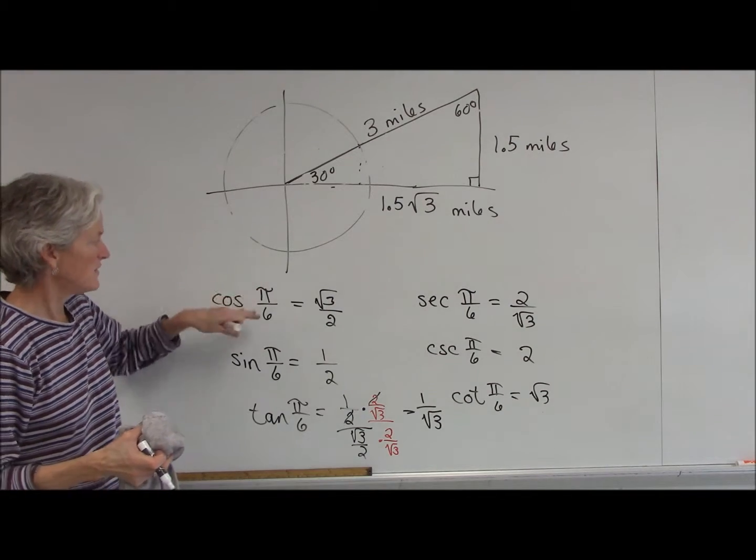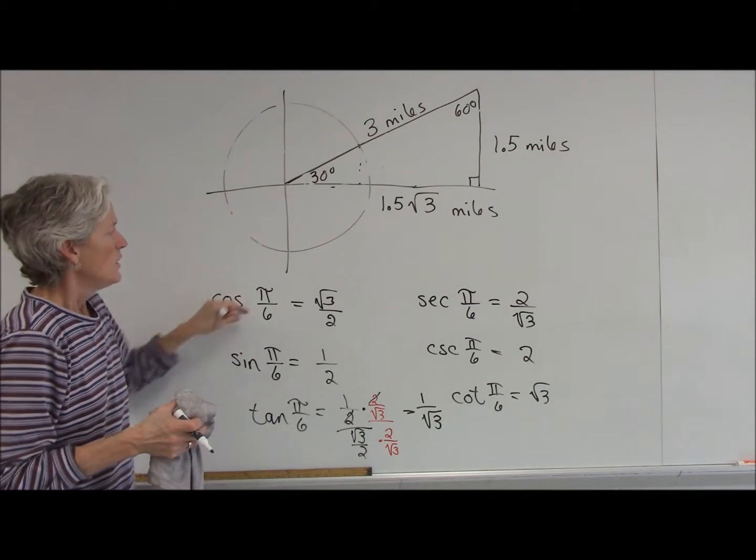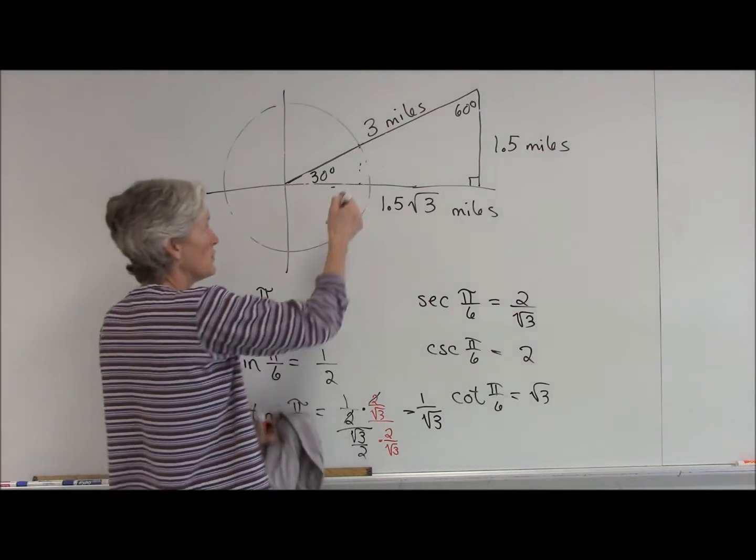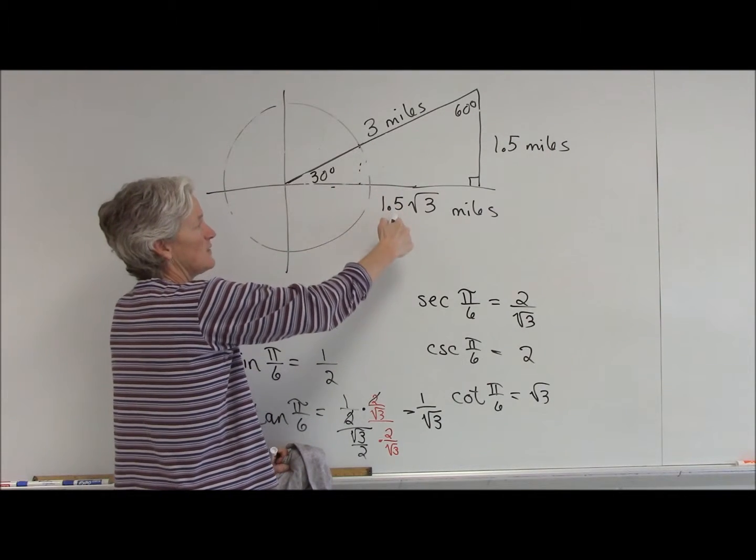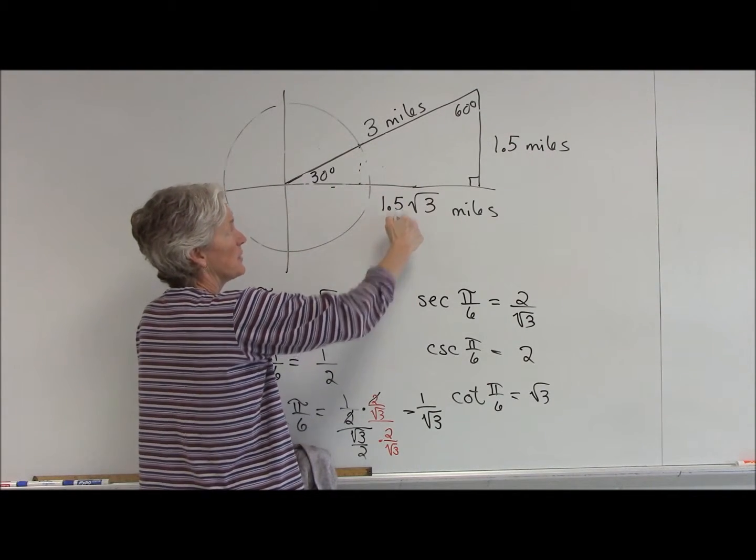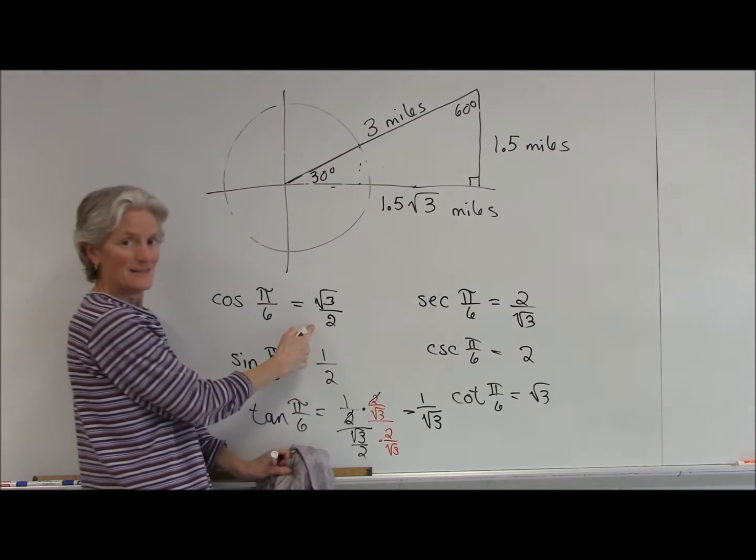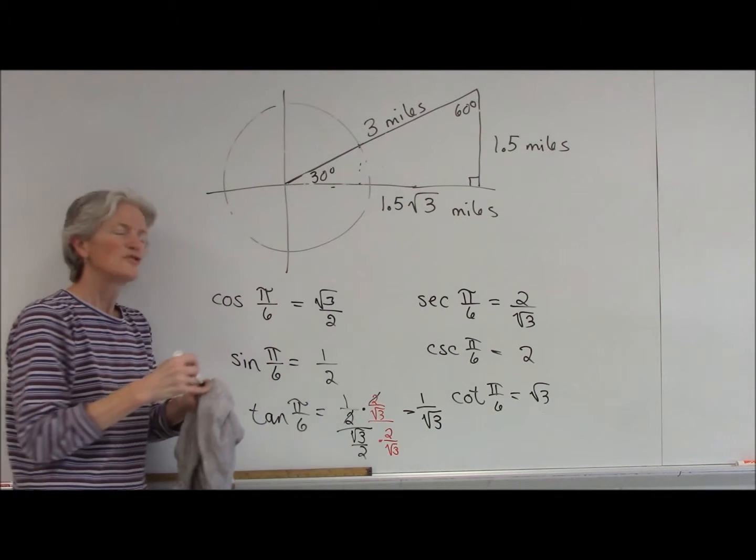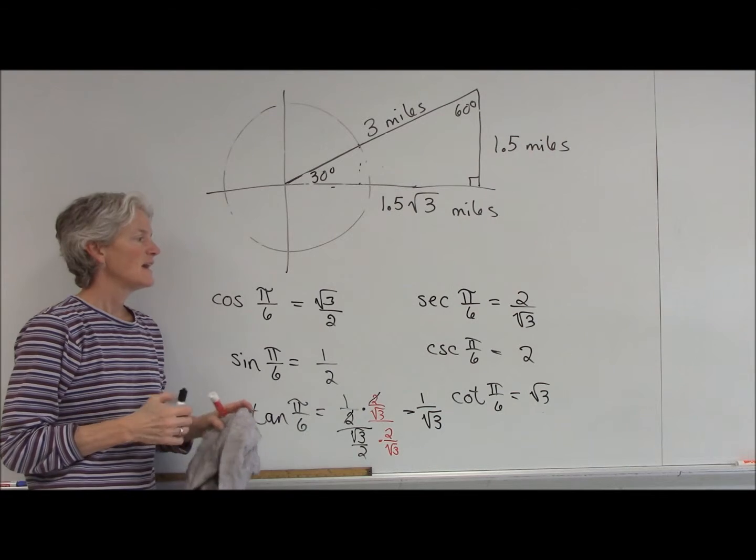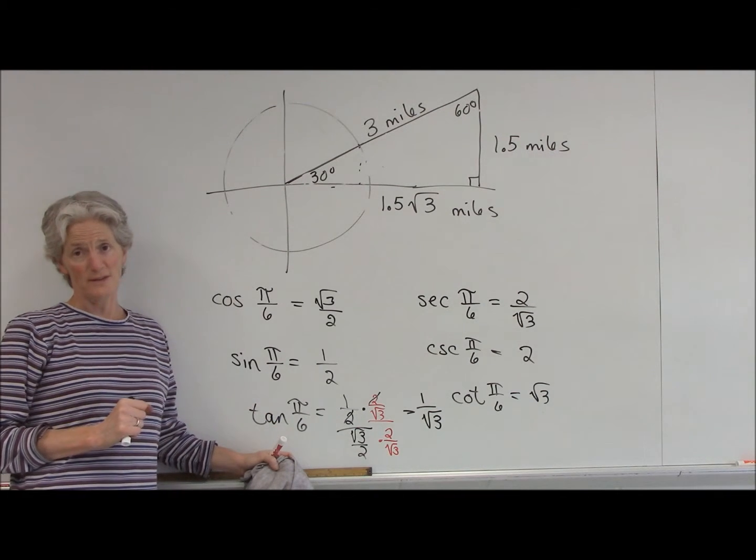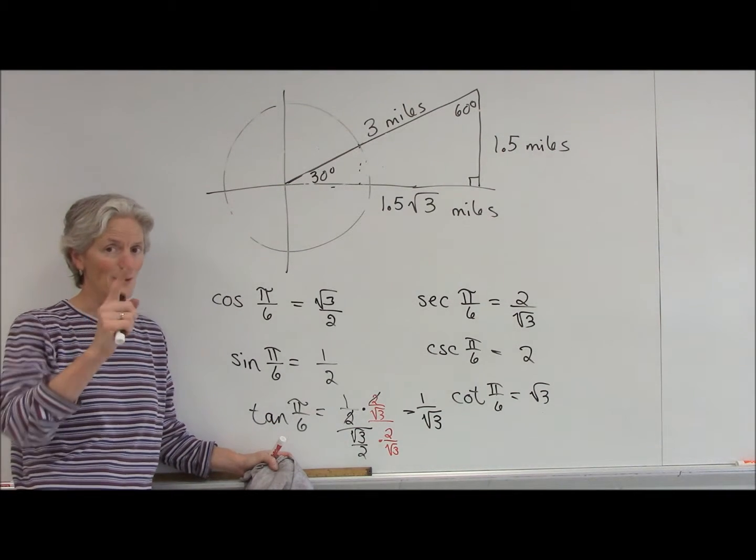So, the cosine of pi over six, or 30 degrees, square root of three over two, let's see if that would be the same thing. Cosine is 1.5 square root of three over three. Yeah. That simplifies to the same thing. So, you're just finding a ratio of sides whenever you're doing this. Always remember that.